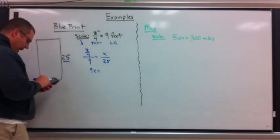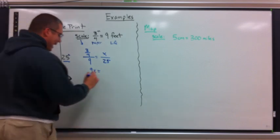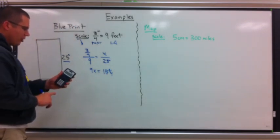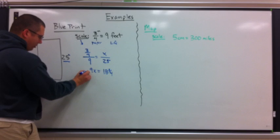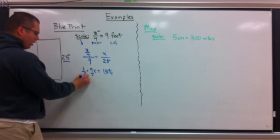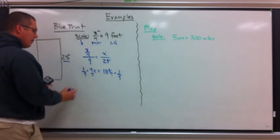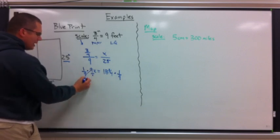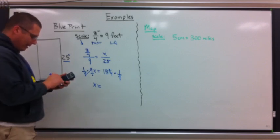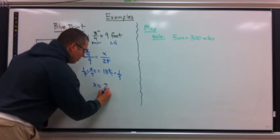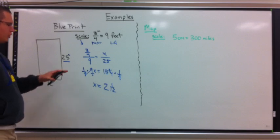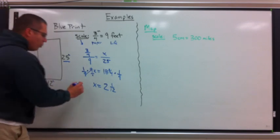Cross products: 9x equals three-fourths times 25. Type in 3/4 times 25 on the calculator, which equals 18 and 3 fourths. Multiply both sides by the reciprocal of 9, which is 1 over 9. The 9s cancel out, and x equals 18 and 3/4 times 1/9, which gives the answer of two and one-twelfth.